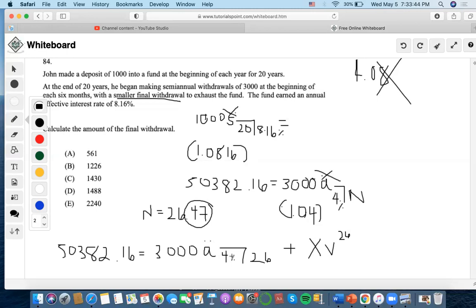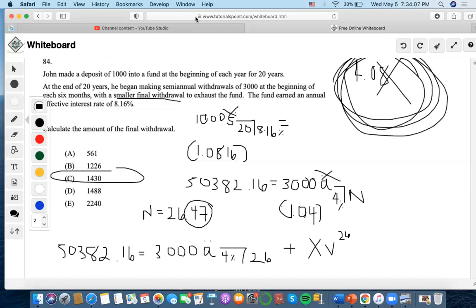Now I'm going to multiply it by 1.04. I don't know why it's not 1.048 to the 26. And I'm going to end up getting 1,430.37 as the answer. Again, I don't know why this is not included in the answer key.